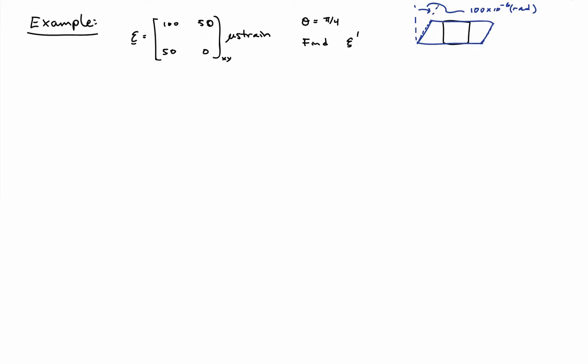Let's look at an example for transforming strains. Suppose we're given a strain tensor at a given point in a body in an XY coordinate frame. We have a normal strain in the X direction of 100 microstrain — that's 100 times 10 to the minus 6 — and strain has no units. And a shear strain in the XY plane of 50 microstrain. Remember, this is tensorial shear strain.